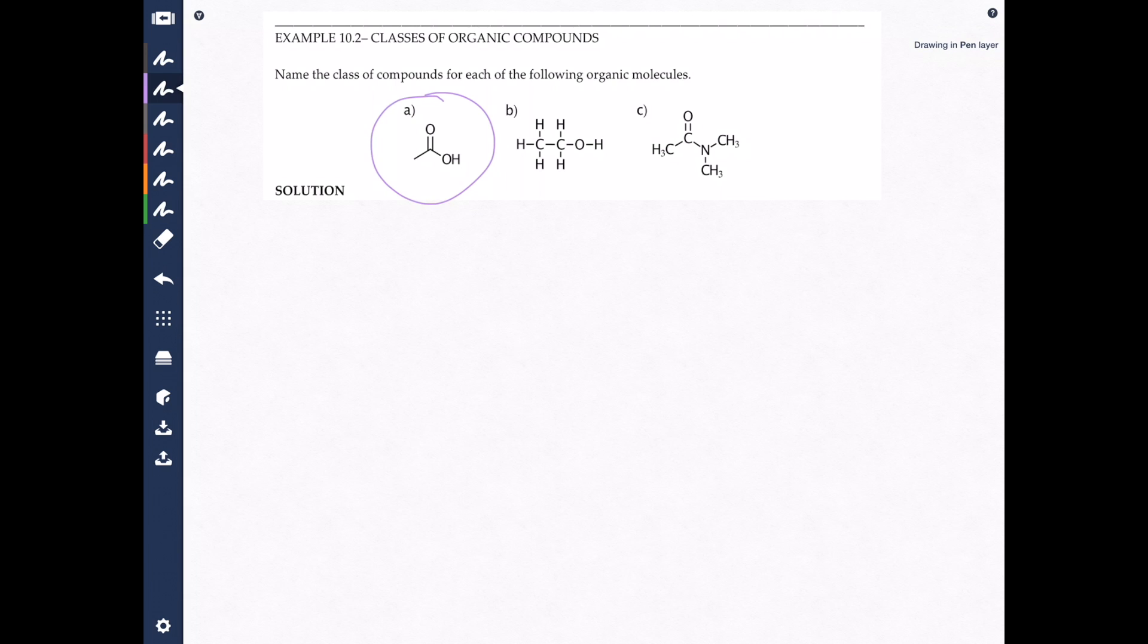Let's take a look at the first one, letter A. We want to name that class of compounds. Students often will look at a molecule and kind of panic a little bit. When you look at a molecule and you're trying to figure out what class of compound it is, the first thing I like to do is look at the non-carbon hydrogen elements or atoms. Here I have an oxygen and an oxygen. So okay, my class of compound has to be one of the few that have two oxygens.